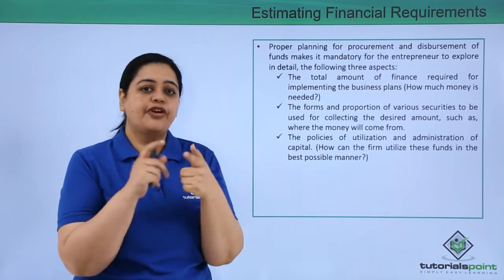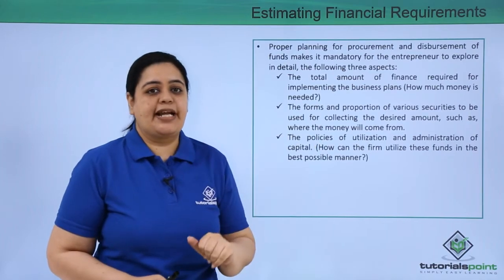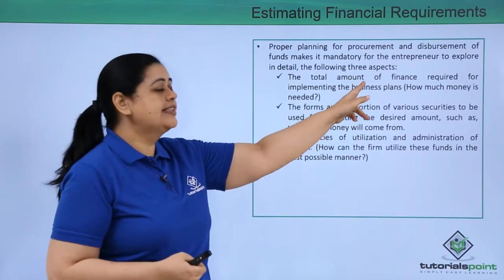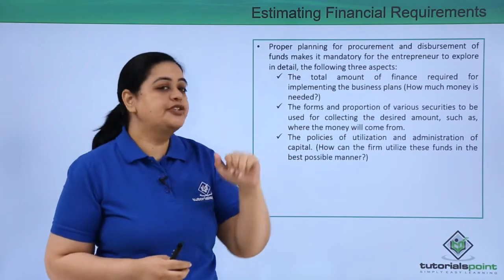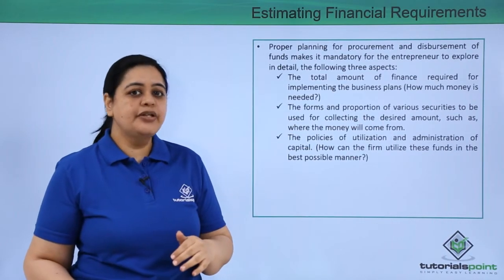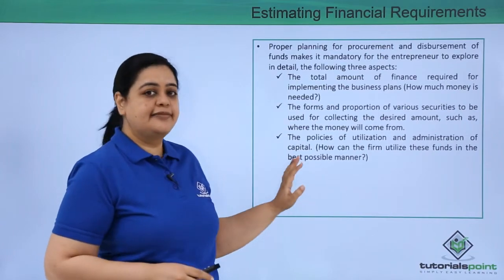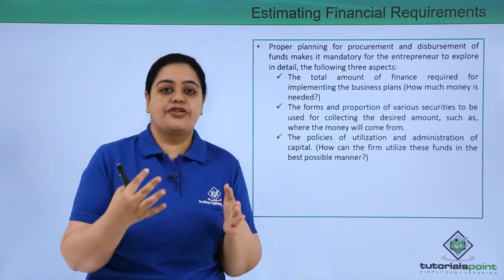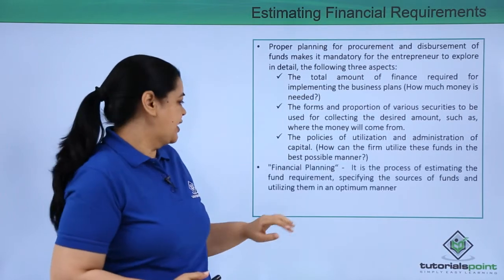The three aspects are: first, what is the total amount of money or finance required to implement the business plan — for example, when going for expansion, you need to know the total funds required. Second, the proportion and form of various securities to be used to collect the desired amount — whether money will come as a business loan or from an investor ready to invest in your business. Third, the policies for utilization and administration of the capital — how the firm will utilize the money to ensure objectives are attained in the best possible manner.